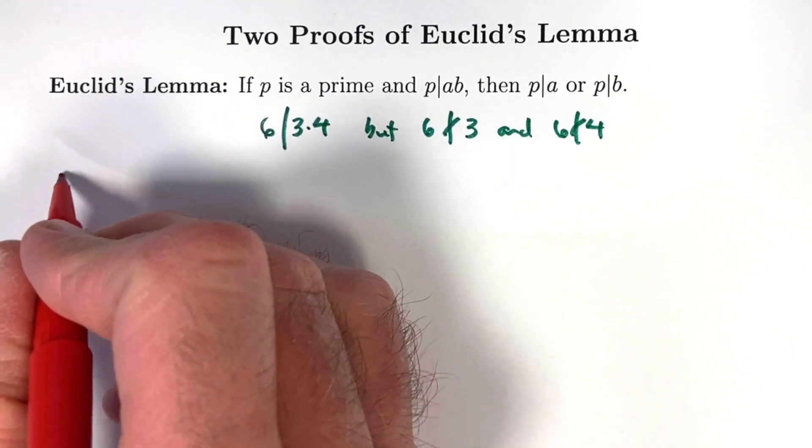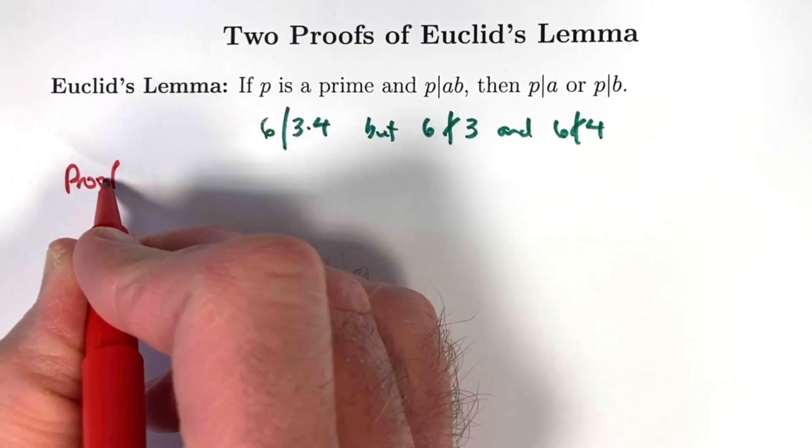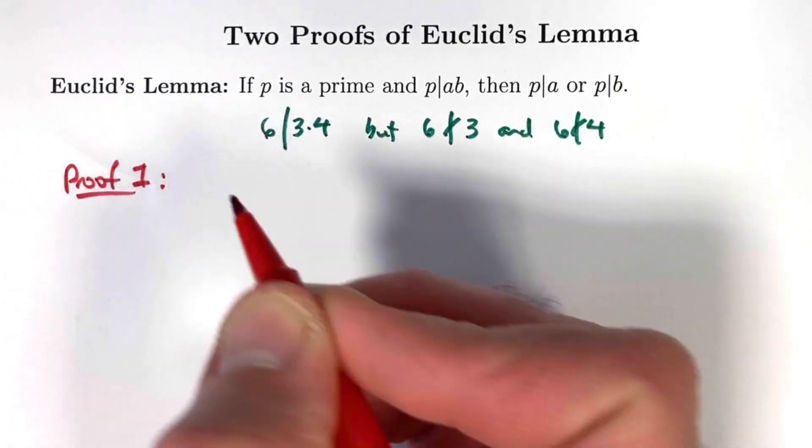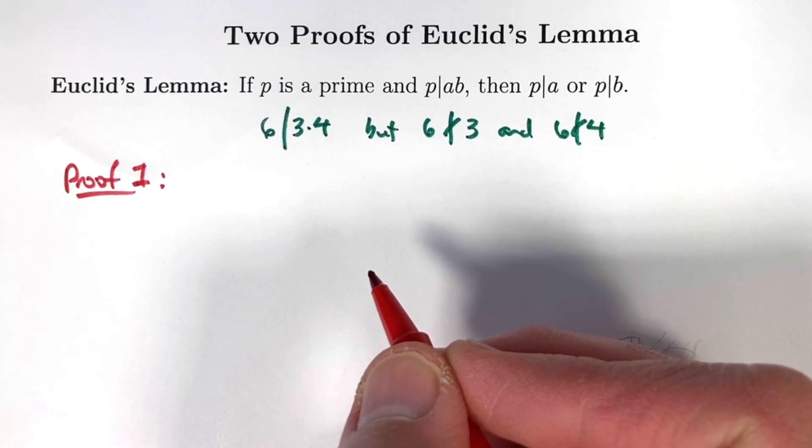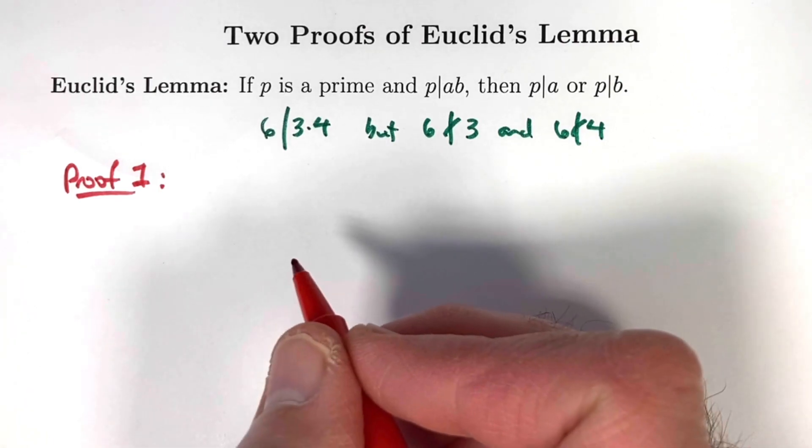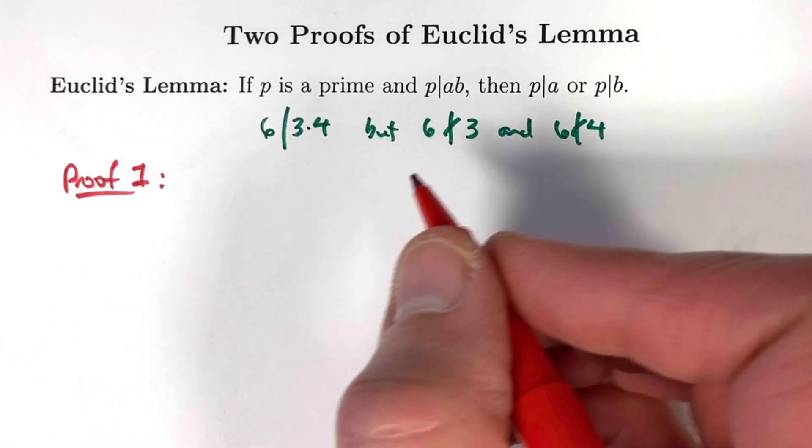Let's look at proof 1. It's going to be based on the fundamental theorem of arithmetic, which says that each natural number greater than or equal to 2 has unique prime factorization.